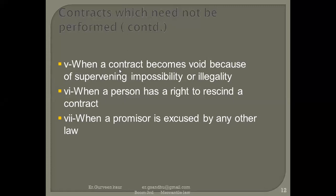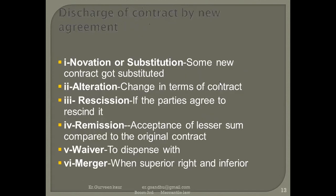A contract is also discharged when it becomes void due to supervening impossibilities or illegalities — when the conditions in the contract cannot be fulfilled or are legally wrong, it is a void contract. When a person has the right to rescind a contract, they can cancel it. When a promisor is excused by the court itself — the court declares the person cannot perform or enter such a contract — the contract is again void.